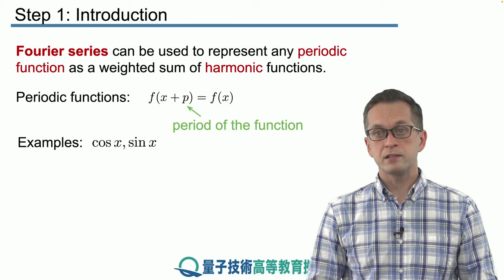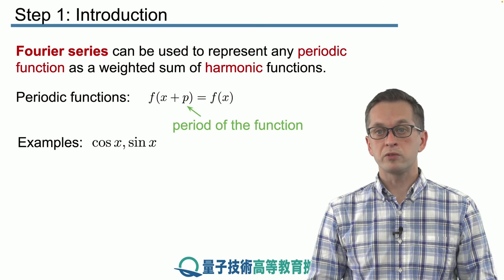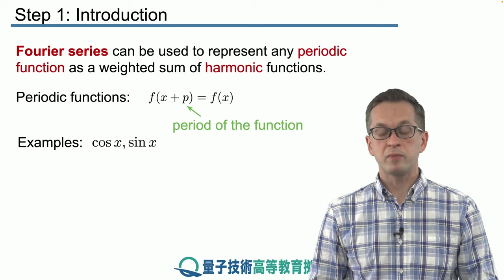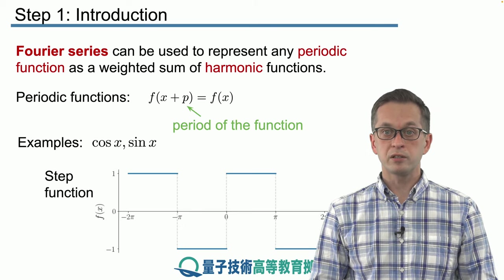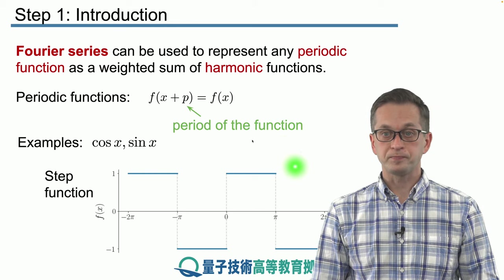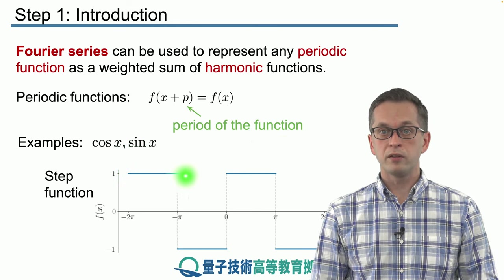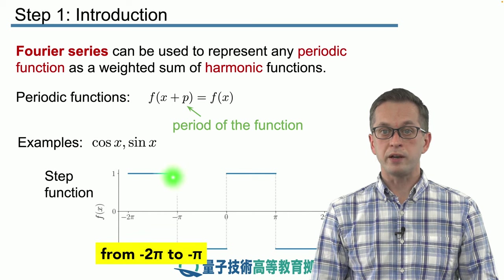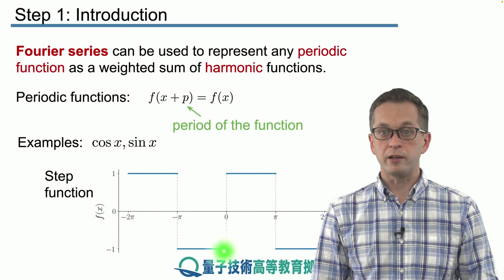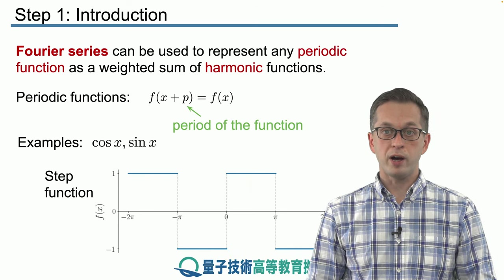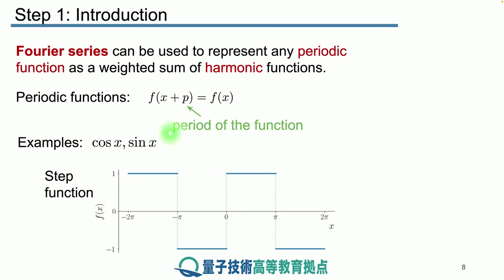But from this lesson onwards, we're going to be concerned also with slightly more exotic functions that are very prevalent, for example, in signal processing, such as the step function. Here, we can see that the function repeats itself, it's one on the interval minus pi to zero, then it flips to minus one. And then after interval pi, again, it flips to one. So we see that the period is two pi, similar to cosine x and sine x.